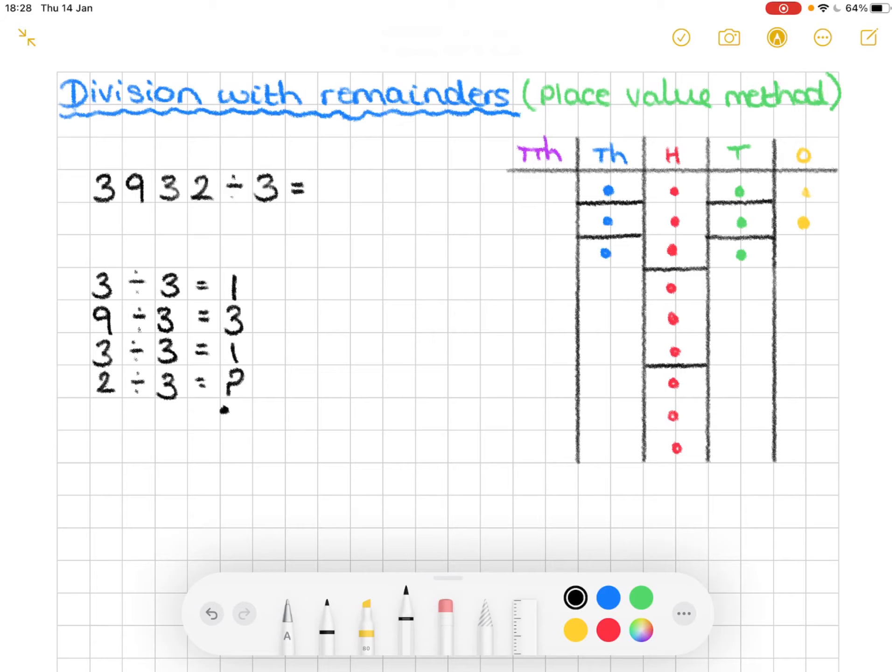Now what I'm going to do is I'm going to take those two spare. Those two left over. And these become my remainder. So my remainder come off the place value grid. They go to the side. I'll put our two.